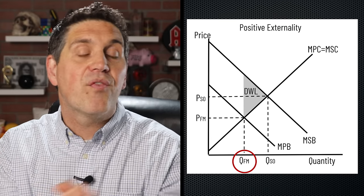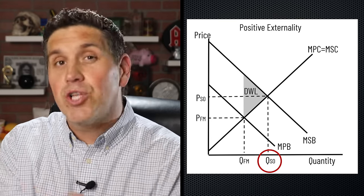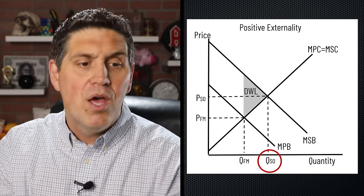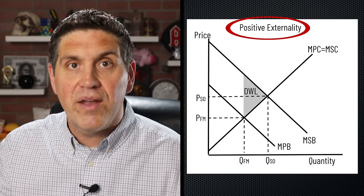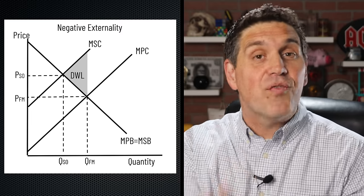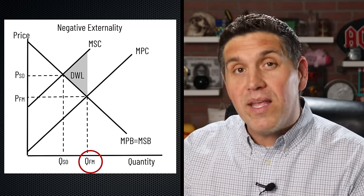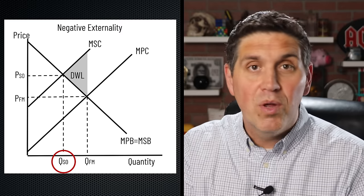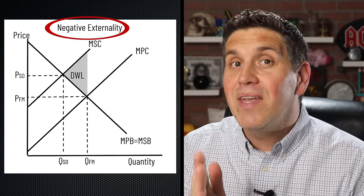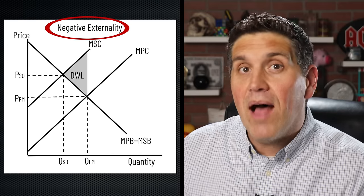Rule two: a negative externality always produces too much and a positive externality always produces too little. This is going to help you figure out what's going on in the graph. If the quantity in the free market is less than the socially optimal quantity, you know it must be a positive externality — we're not producing enough. And if the free market quantity is more than the socially optimal, we're producing too much — that must be a negative externality.